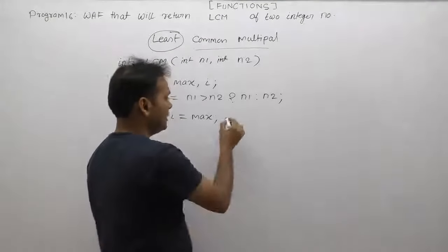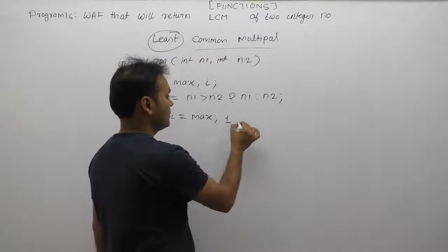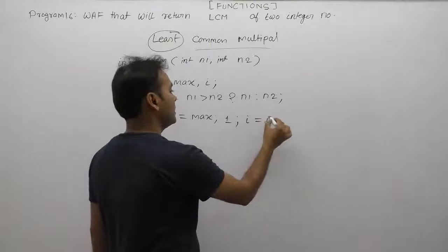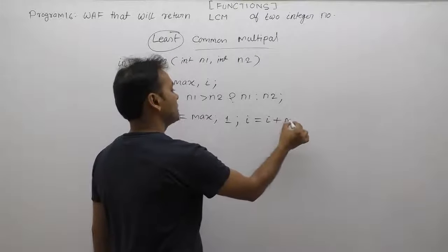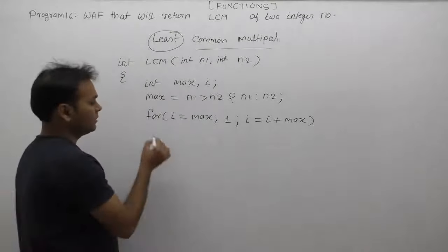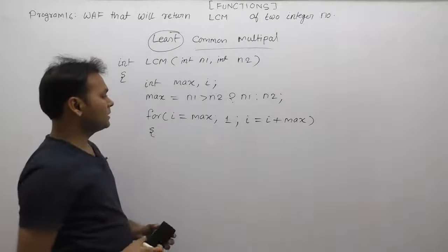We increment i by max every time: i equals i plus max. This way, i will take values that are multiples of max.